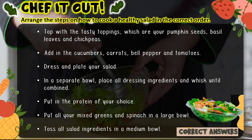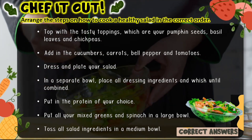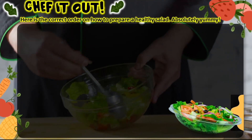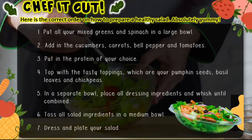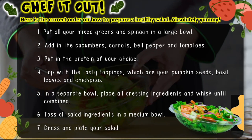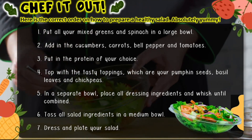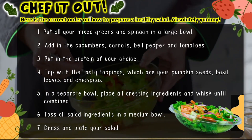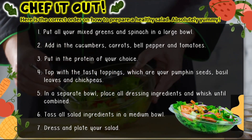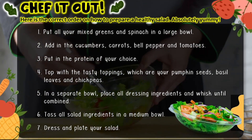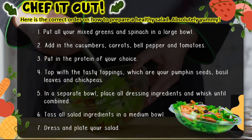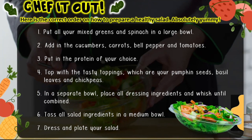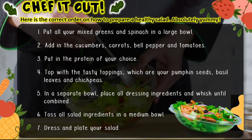Here are the steps on how to prepare a healthy salad. First, put all your mixed greens and spinach in a large bowl. Second, add in the cucumbers, carrots, bell pepper, and tomatoes. Third, put in the protein of your choice. Fourth, top with the tasty toppings — pumpkin seeds, basil leaves, and chickpeas.